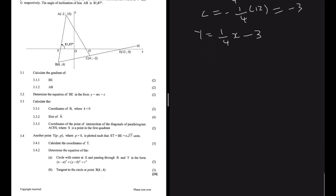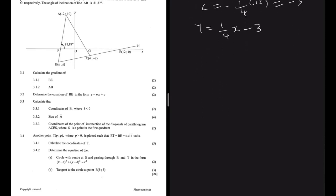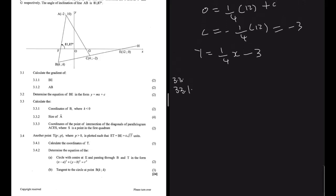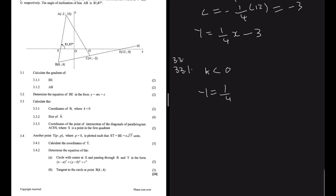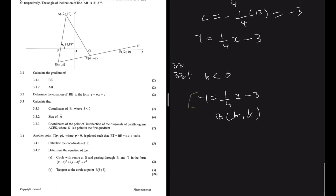Question 3.3.1 says calculate the coordinates of B where k is less than 0. We know the equation of BE is y equals (1/4)x minus 3, and B is made out of k and k. Because B is made out of k and k, the x and y coordinates are the same, so if we substitute into our equation we'll have one variable and be able to solve it.